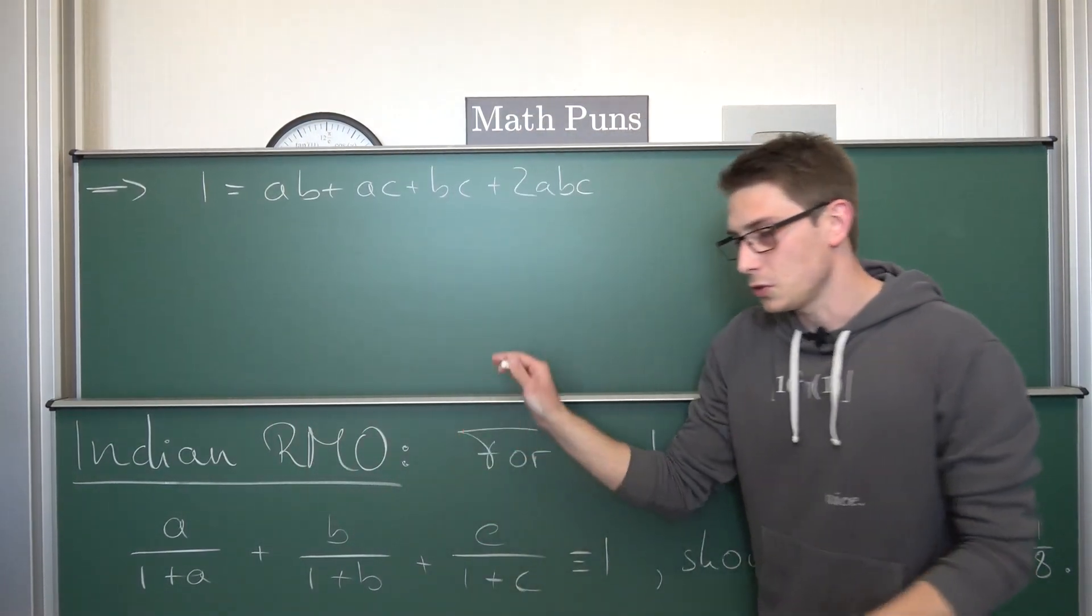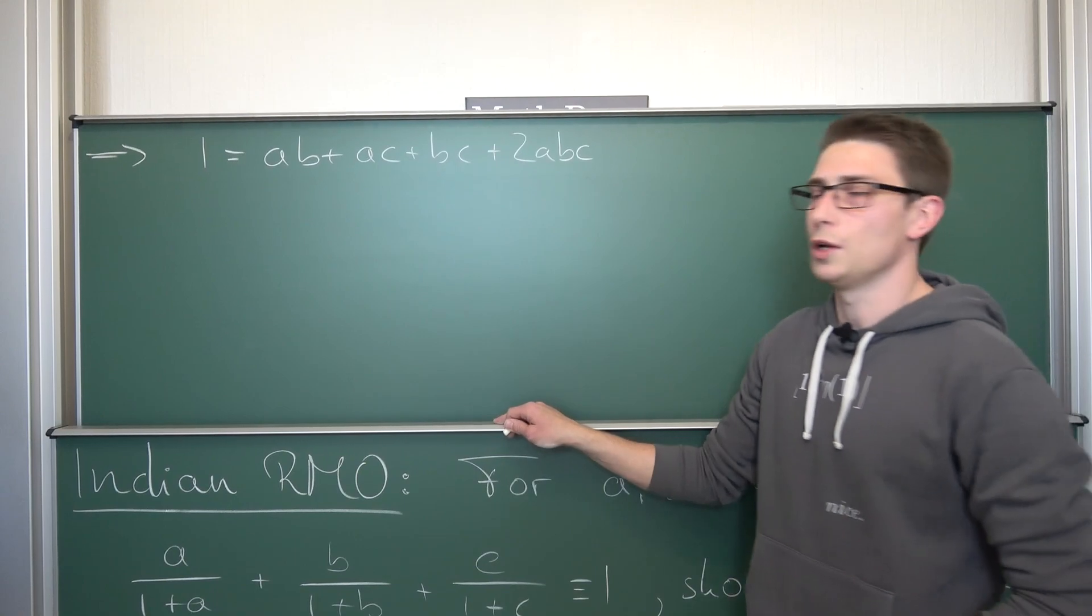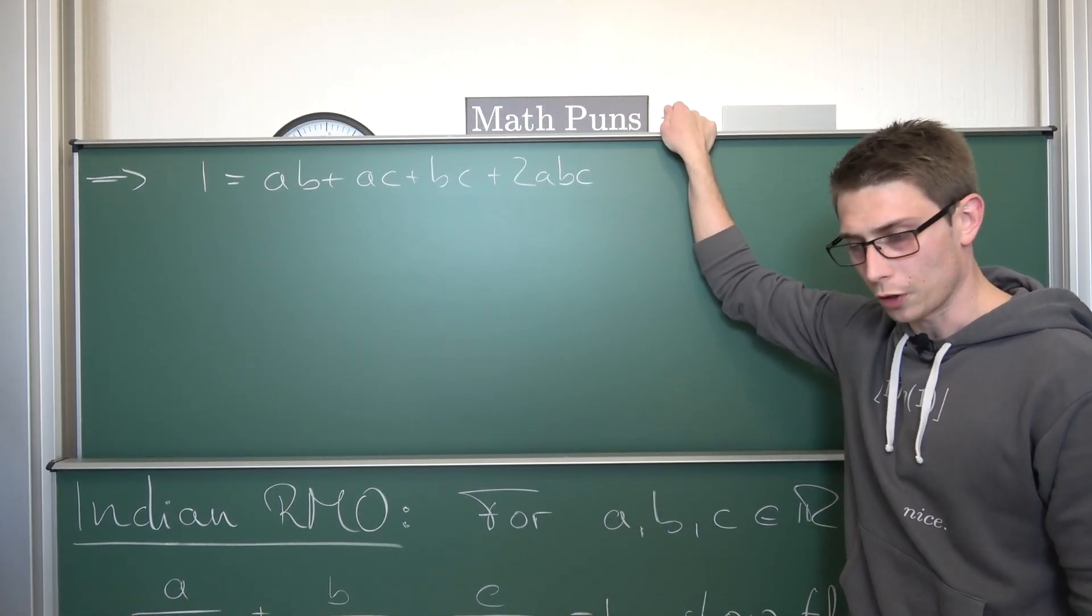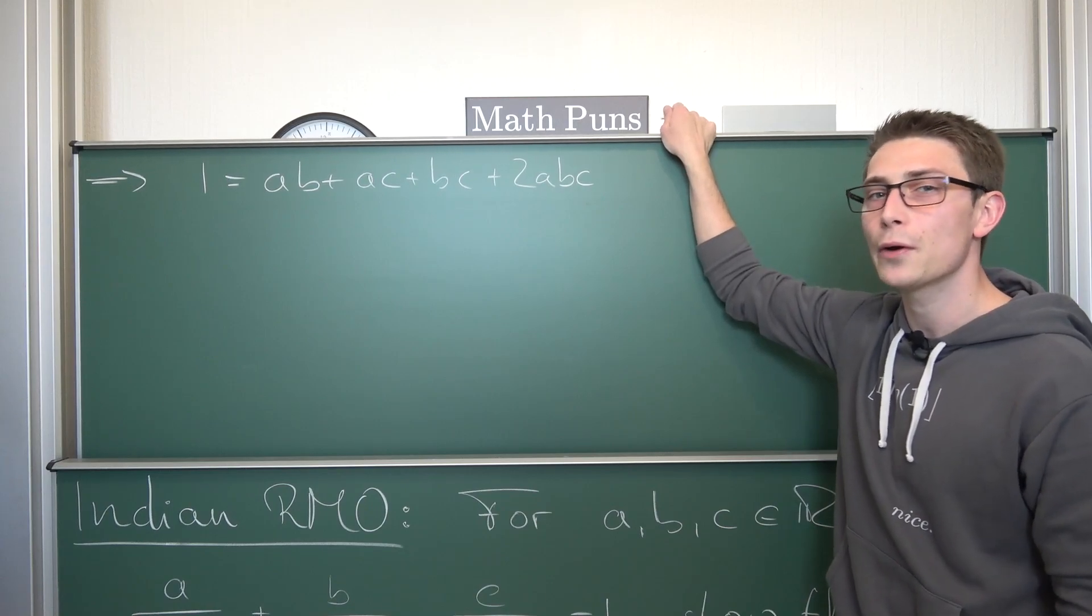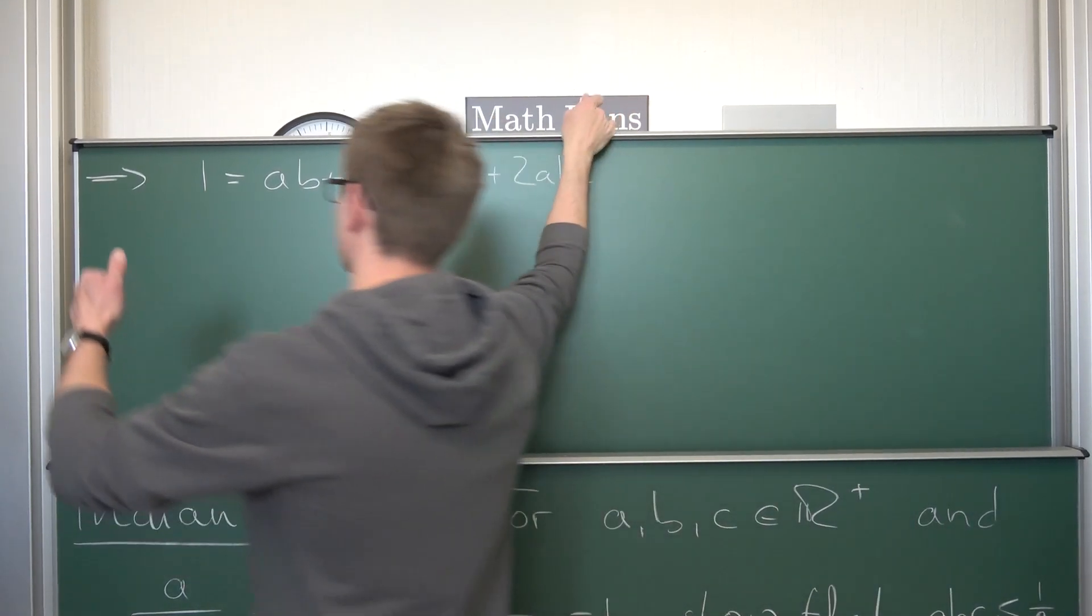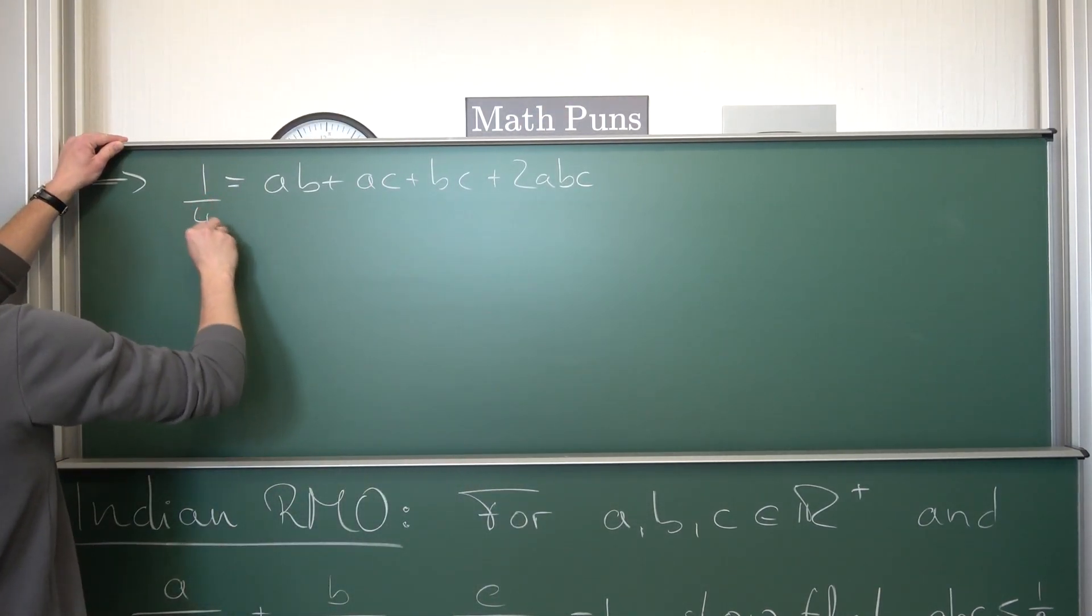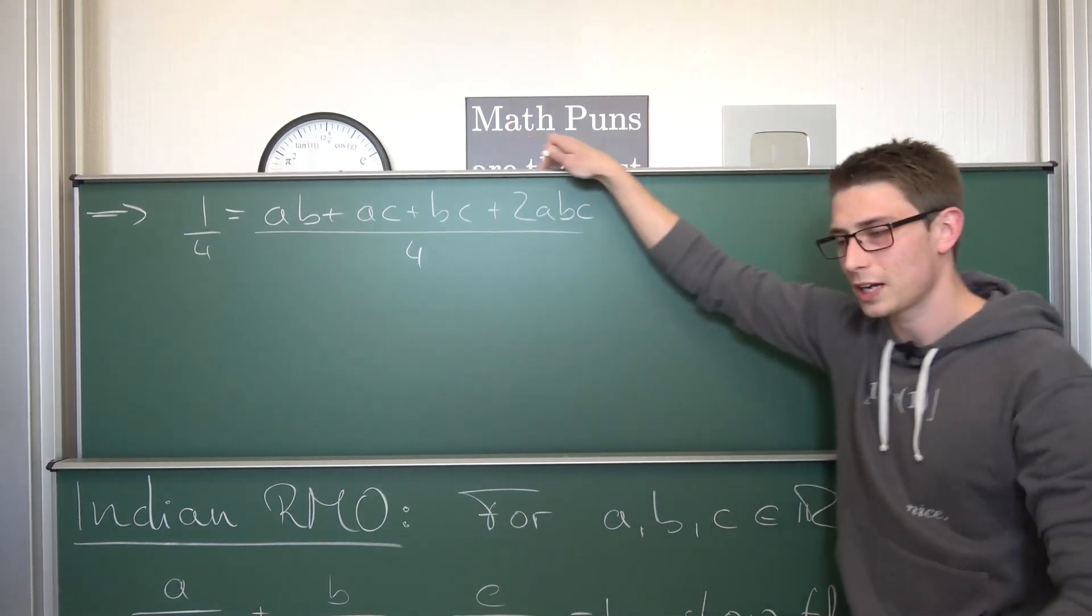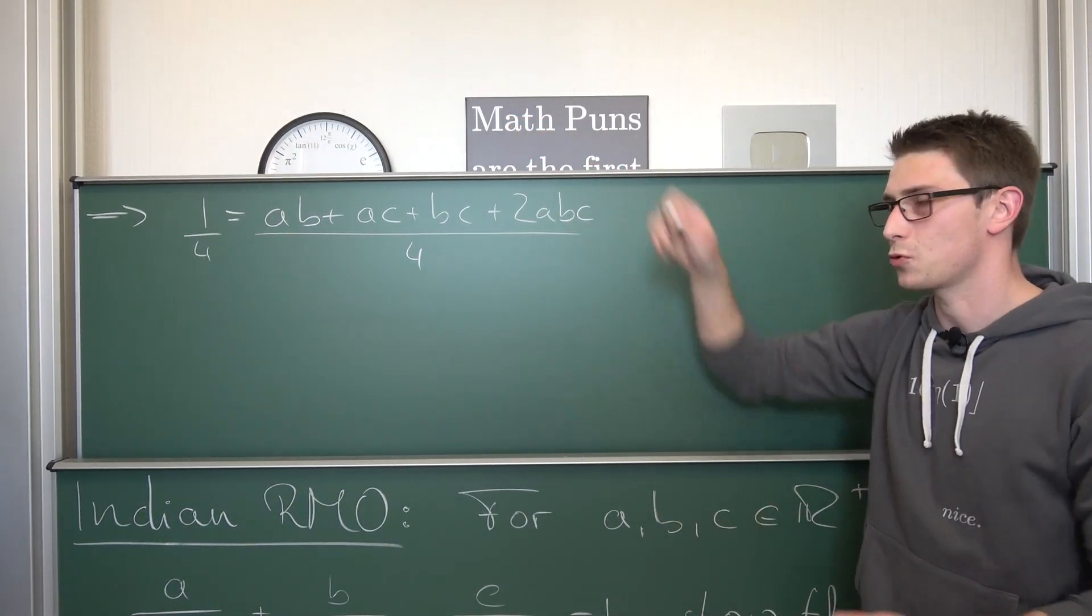Overall we get 1 is equal to ab+ac+bc+2abc. And now what I'm going to do next is what I would like to call a pro gamer move. Namely I'm going to divide both sides by 4 for reasons that are pretty apparent actually, because 4 is not equal to 0. And now I want you guys to count. Okay, let's do some Sesame Street action right here.